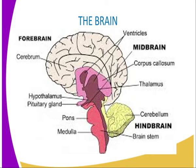With the forebrain, you can see we have got the cerebrum. We have got the midbrain, which is made up of several parts, whereby we have got the corpus callosum, we have the thalamus, hypothalamus, the pineal gland, and we have got the hindbrain, whereby we have the cerebellum, the medulla, and also the brain stem.